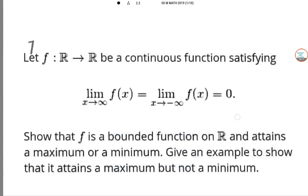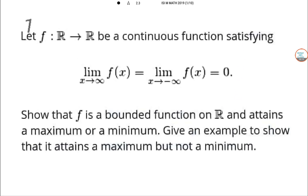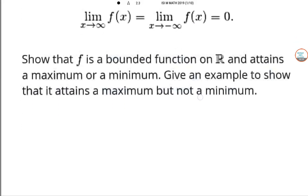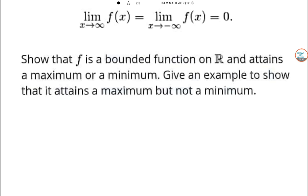Let f: R → R be a continuous function satisfying this condition: limit as x tends to infinity of f(x) equals limit as x tends to minus infinity of f(x). We need to show that f is bounded and attains a maximum or a minimum. Also give an example to show that it attains a maximum but not a minimum.